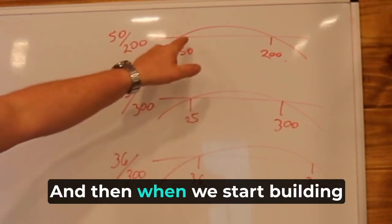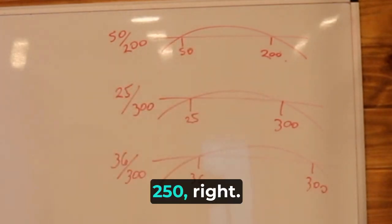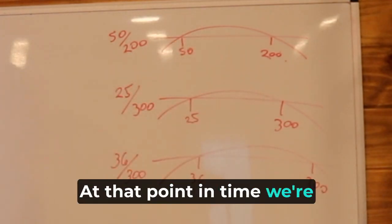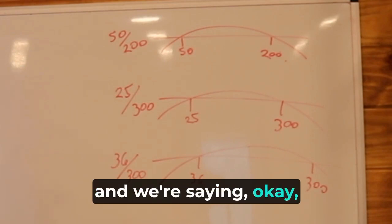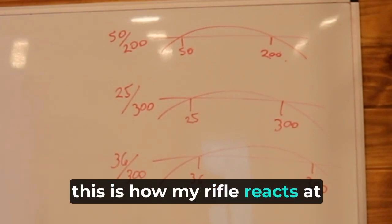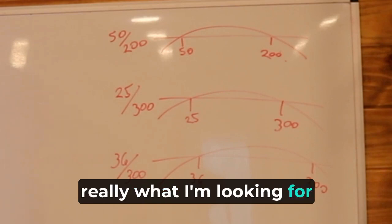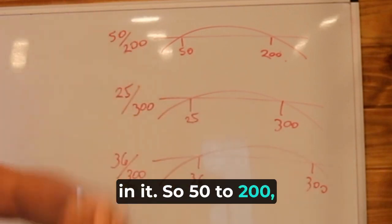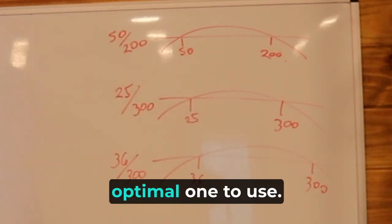And then when we start building dope, going out to like 200, 250, right at that point in time, we're individualizing our rifle and we're saying, okay, this is how my rifle reacts at these distances. And that's really what I'm looking for in it. So 50 to 200, in my opinion, is the optimal one to use.